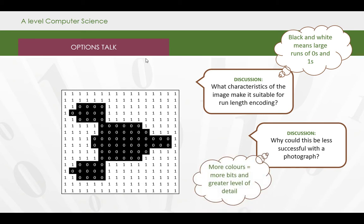If we're using a greater range of colours, which photographs do, we're going to have to store more bits and a greater level of detail. And the runs that we're storing are not going to be as long. We're not going to have necessarily 42 pixels of the same colour.